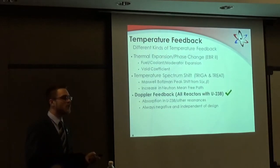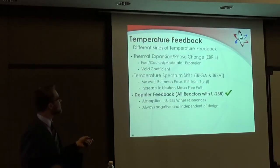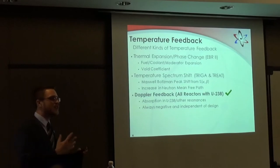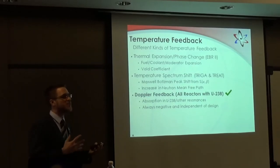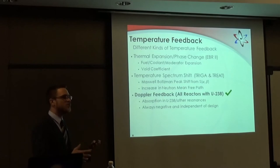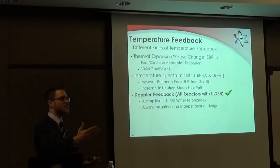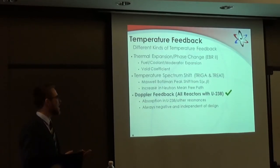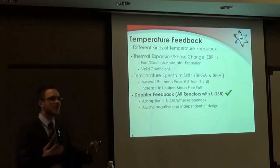A lot of different reactor types cope with this in different ways. Some use thermal expansion; some, as we saw with the TRIGA reactor, use a Maxwell-Boltzmann peak shift. For both of those methods you have to design your reactor correctly — they're very specific to the reactor. But there's a third one: Doppler feedback. Any reactor with U-238, which is basically every commercial reactor because you don't have 100% enrichment, has this negative feedback. As it heats up, resonances absorb neutrons. It's always going to be a negative feedback with U-238, and it's independent of your design — you can have a fast reactor or a thermal reactor.